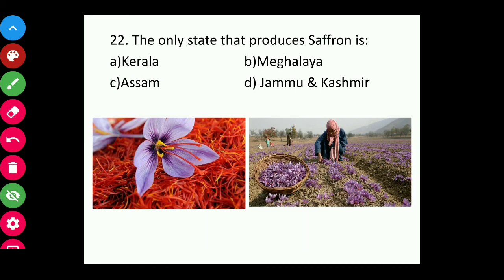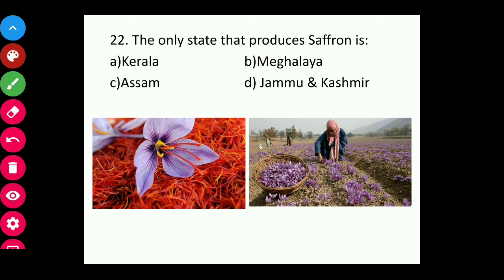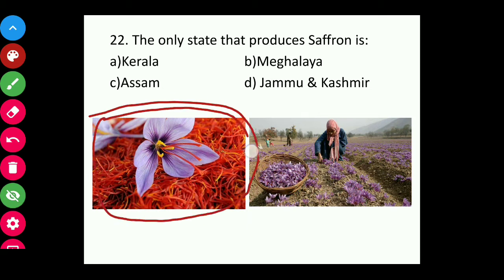Question twenty-two: The only state that produces saffron is Jammu and Kashmir. Saffron is very popular in Jammu and Kashmir and is cultivated there. In India, saffron is produced in Jammu and Kashmir and is used for medicinal purposes and for perfumes.